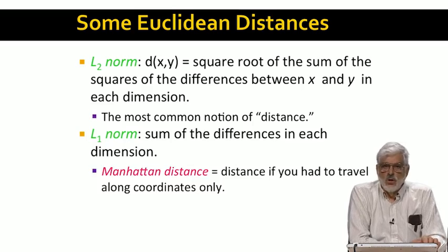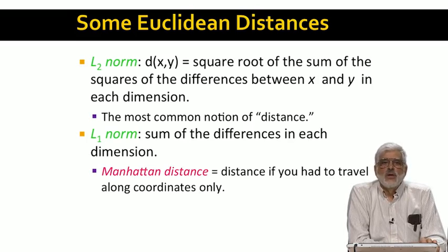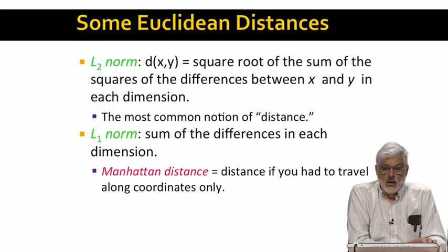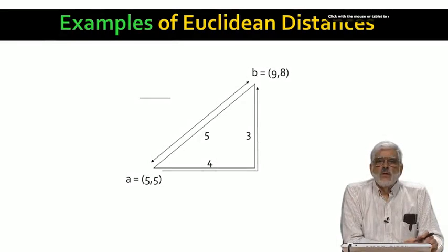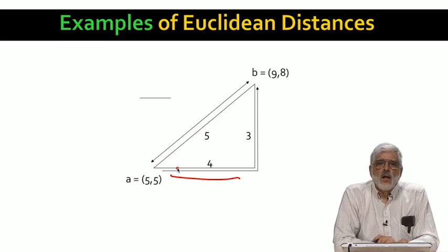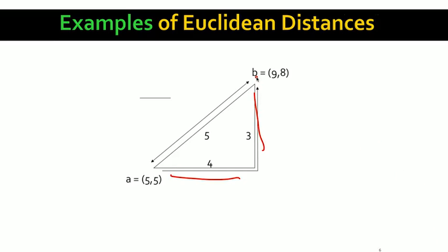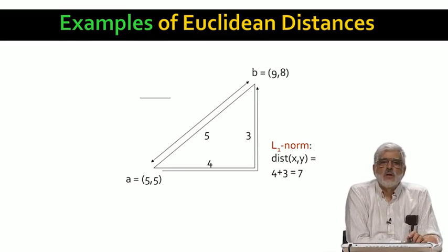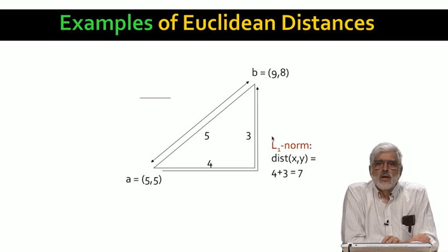Another common choice for Euclidean distance is the L1 norm, or Manhattan distance. If you've ever visited Manhattan in New York, you know that the streets are laid out in a grid. You can't walk directly between points — you need to first walk in one direction, say north-south, and then in the other, say east-west. The L1 norm between points x and y is the sum of the distances between x and y along each dimension. For example, for points A=(5,5) and B=(9,8), the difference is 4 horizontally and 3 vertically, giving an L1 norm of 4 plus 3, which is 7.